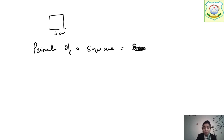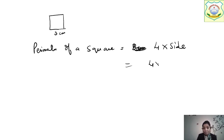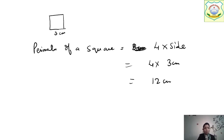Let's write the formula first: perimeter of square = 4 × side. So 4 multiplied by 3 cm equals 12 cm. You can see this option in the question — the third option is 12 cm. So this is the answer.